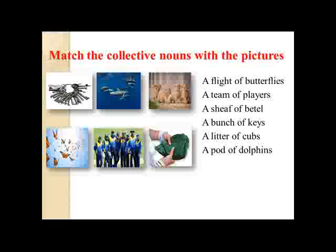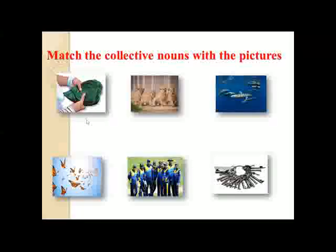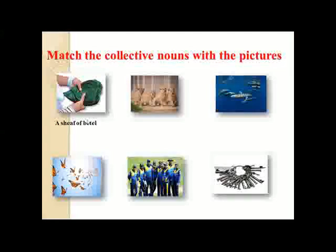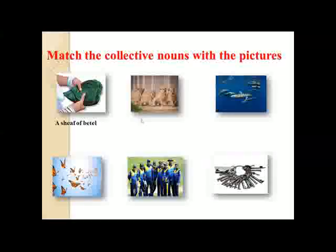Okay, I hope you have found the answers — let's check them. It's very easy, isn't it? Now look at the first picture. What can you see there? They are bees, so what is the correct collective noun? It is a swarm of bees. Next, you can see some cubs — so what is the correct collective noun? Yes, it's a litter of cubs.